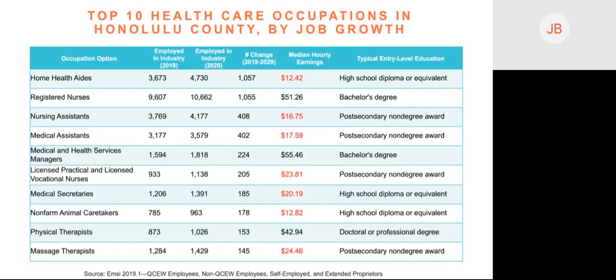Here you'll see an example of how we might share labor market information about occupation growth in a region. We're looking at Honolulu's top 10 healthcare occupations by job growth. Occupations where the median hourly earning is shown in red indicate that those occupations at entry level offer a wage below the regional living wage for one adult supporting one child. We also share the number of projected jobs to grow over the next 10 years and the typical entry-level education preferred for each specific occupation.